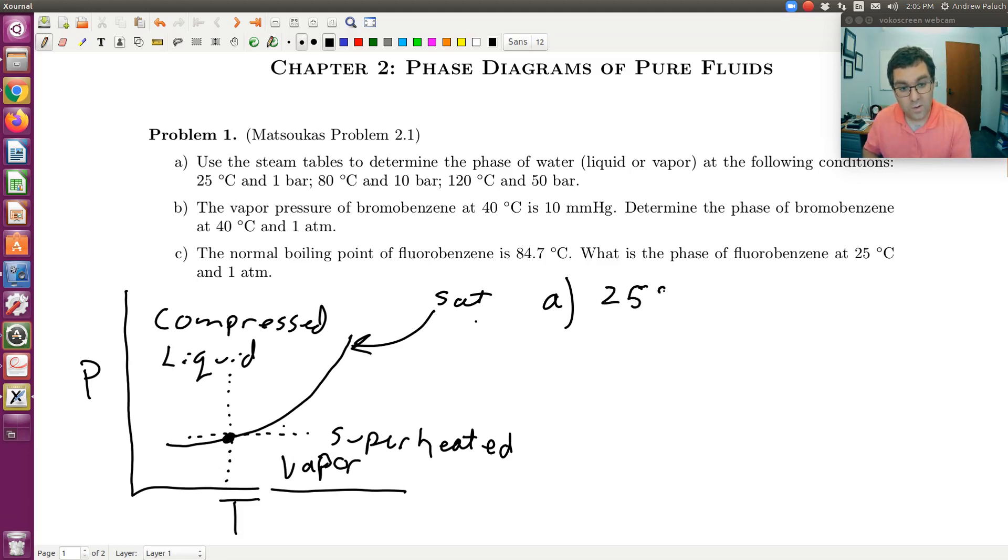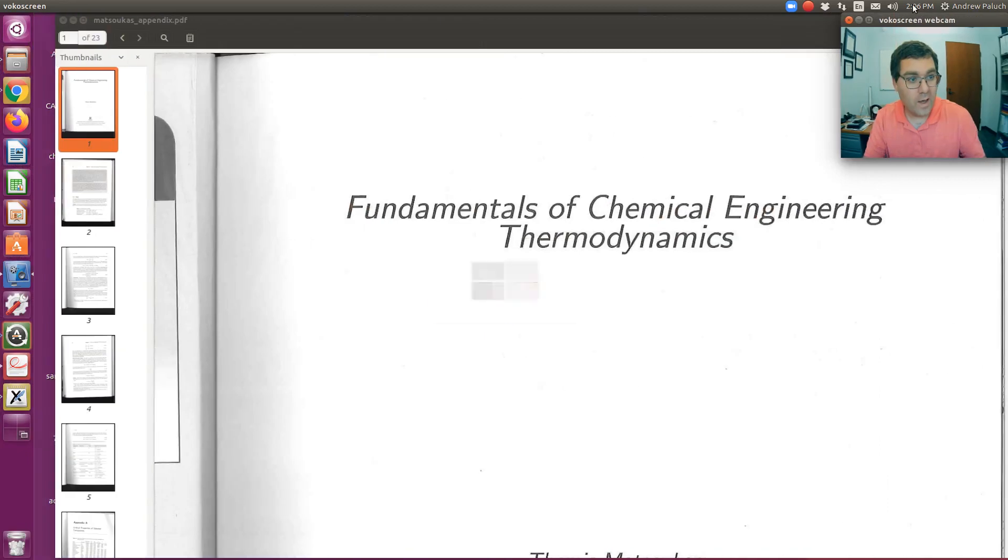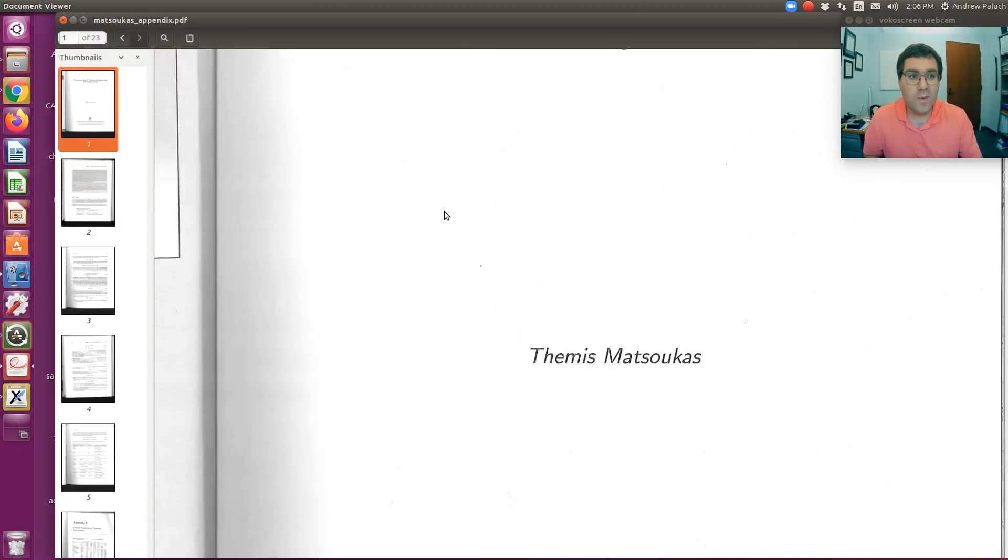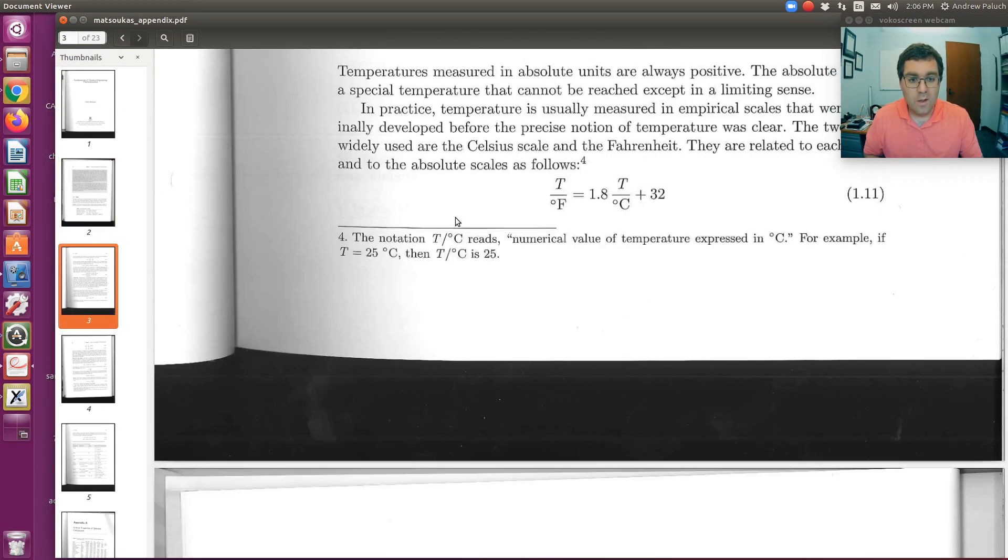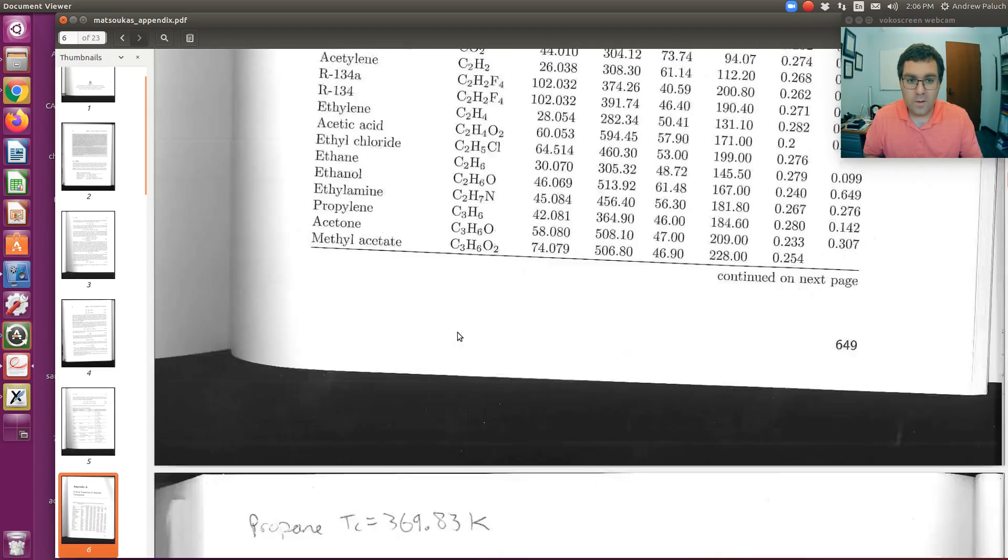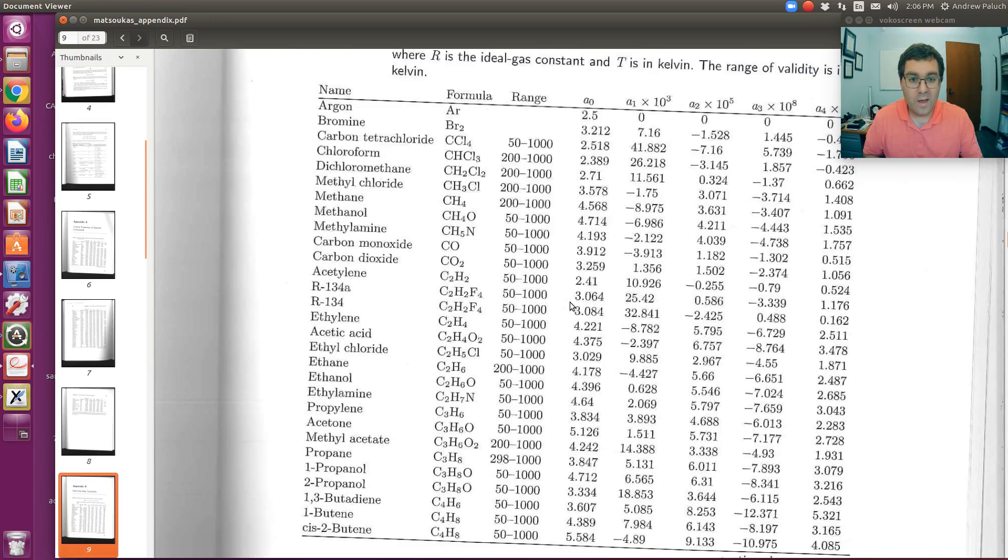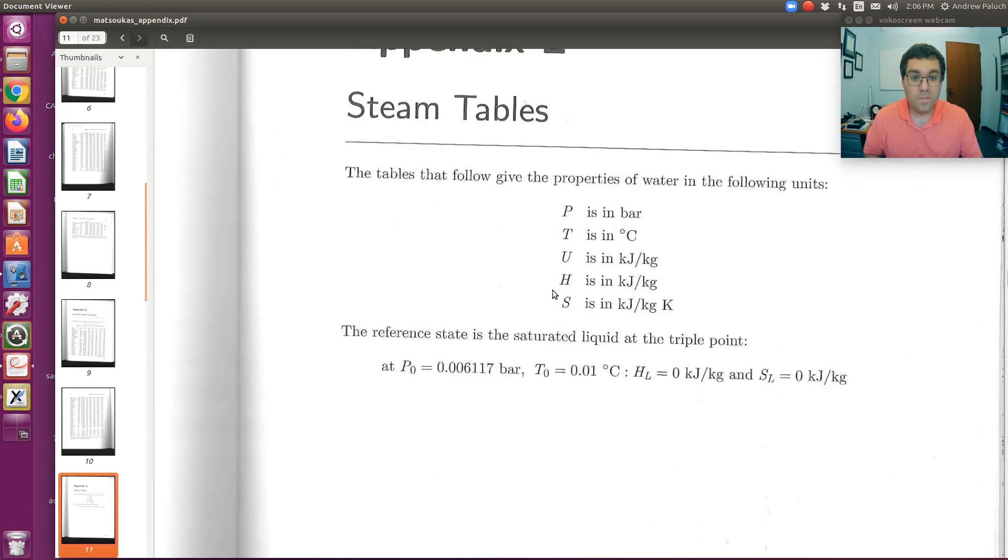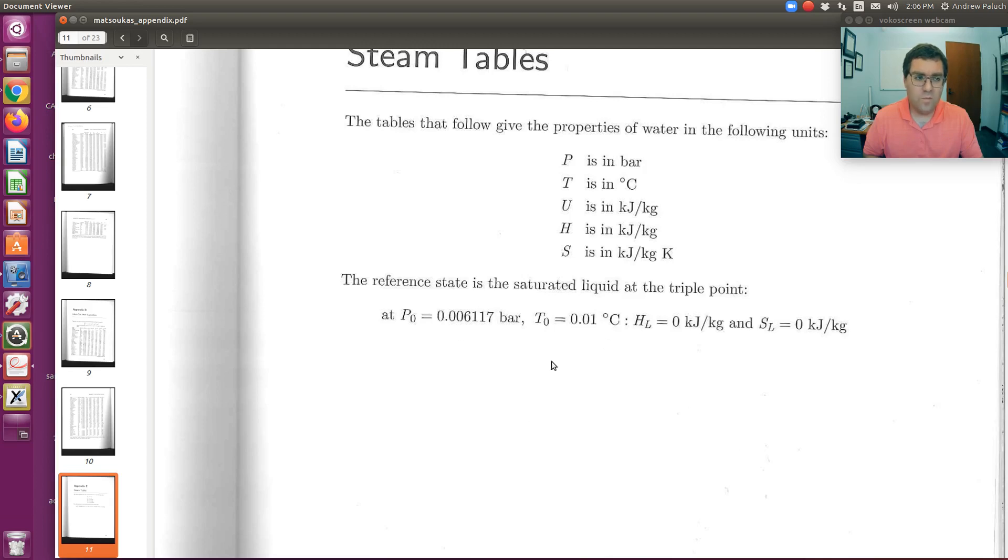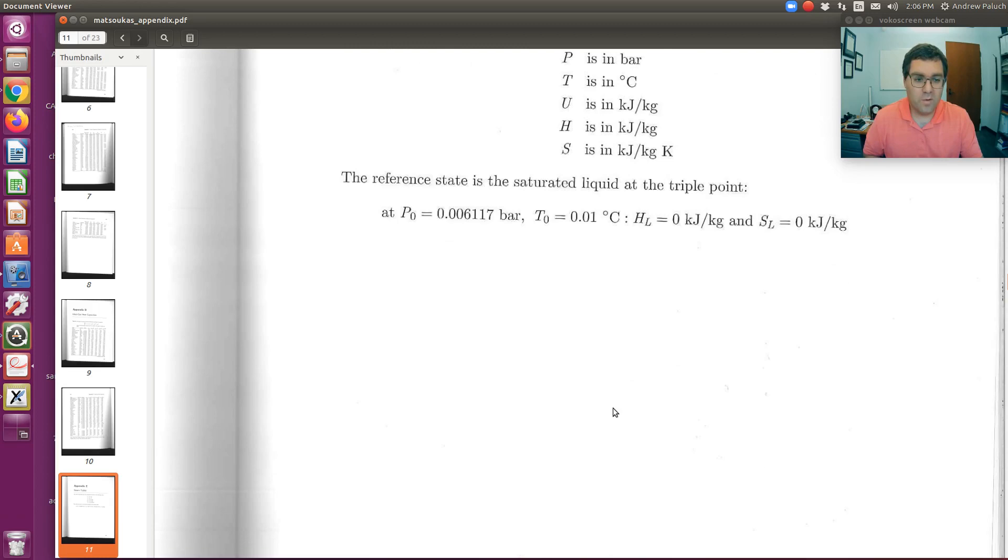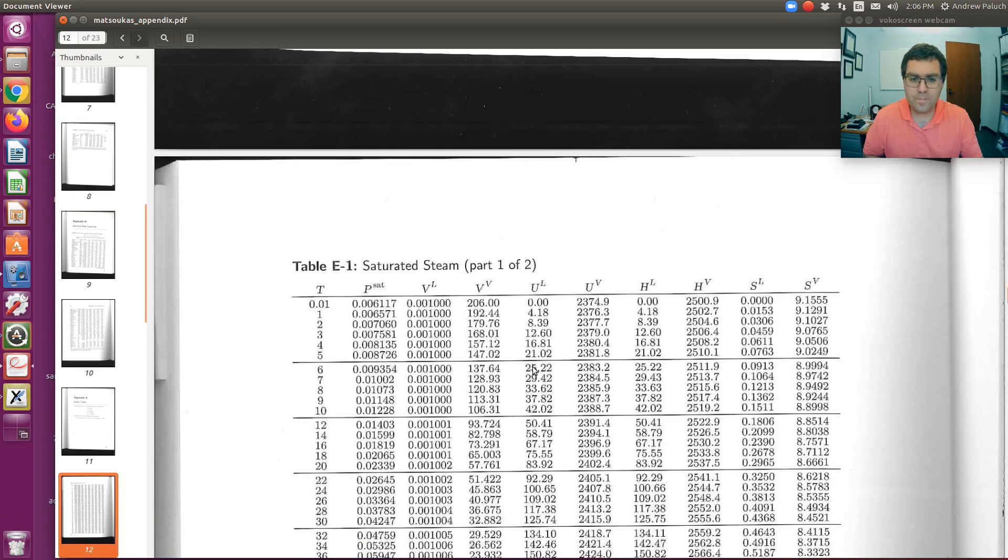So first we're going to look at 25 degrees C and one bar. Sorry, I'm a little rusty on my tablet. Hopefully my handwriting will improve. In the next window, I have the appendix from the text. I just downloaded them from the course Canvas page. If I scroll down, a little bit about units, critical properties, heat capacities, ideal gas heat capacities, and then steam tables. This will remind you of what your units are as you copy properties from your steam tables.